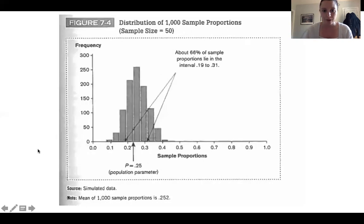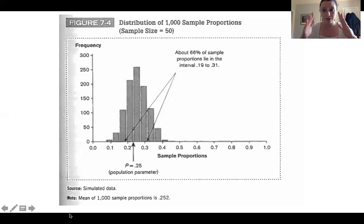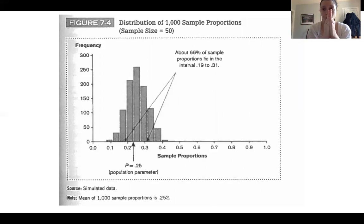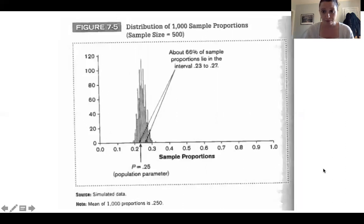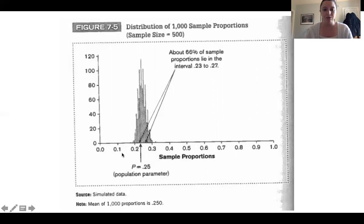Now let's increase our sample size to 50. When we sample 50 people repeatedly and plot those averages, the graph starts to converge around the center where the actual population parameter is: 0.25. Increasing to 500 people per sample, plotting the average rating each time, gives us a distribution that is really converging on that 0.25 number. When we increase our sample size, we get closer to the actual population average if we are randomly sampling.